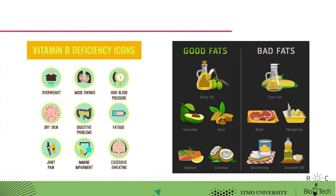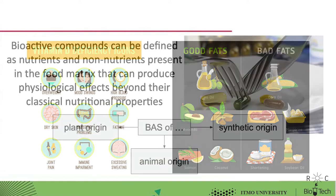Certain regions of the planet need various biologically active substances depending on the climate, lifestyle and cultural characteristics. For example, under conditions of lack of sunlight, vitamin D deficiency may be a relevant issue. In regions with a high risk of diabetes, it is important to enrich foods with substances that will have a beneficial effect on carbohydrate metabolism, for example, essential fatty acids.